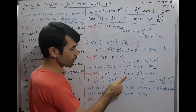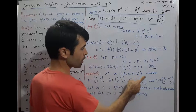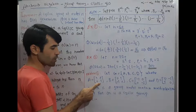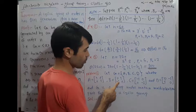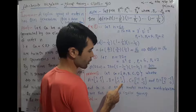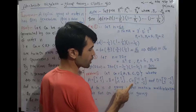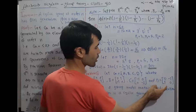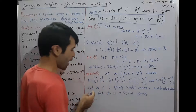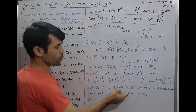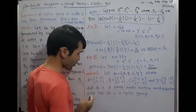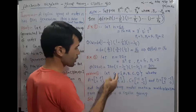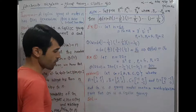Let G = {A, B, C, D} where A = [1 0; 0 1], B = [0 1; −1 0], C = [−1 0; 0 −1], and D = [0 −1; 1 0], and G is a group under matrix multiplication. We want to prove that G is a cyclic group.